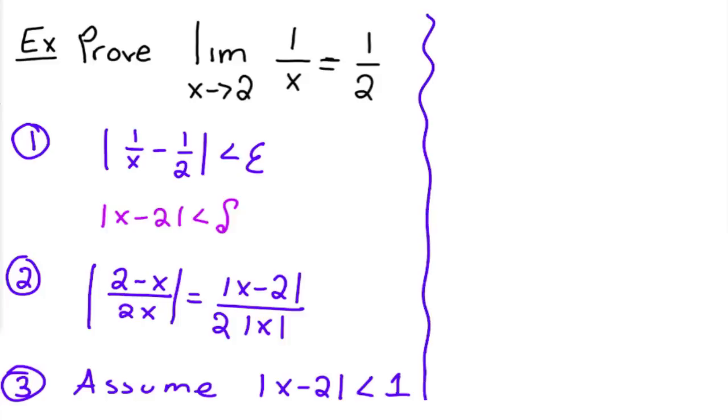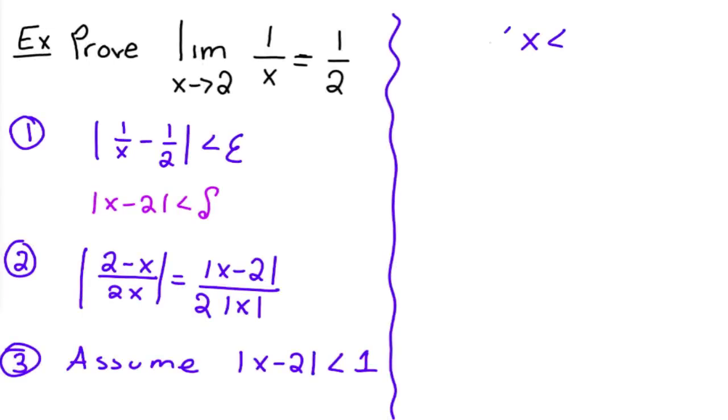So then if x minus 2 is less than 1, then that means that x is going to be between 3 and 1.